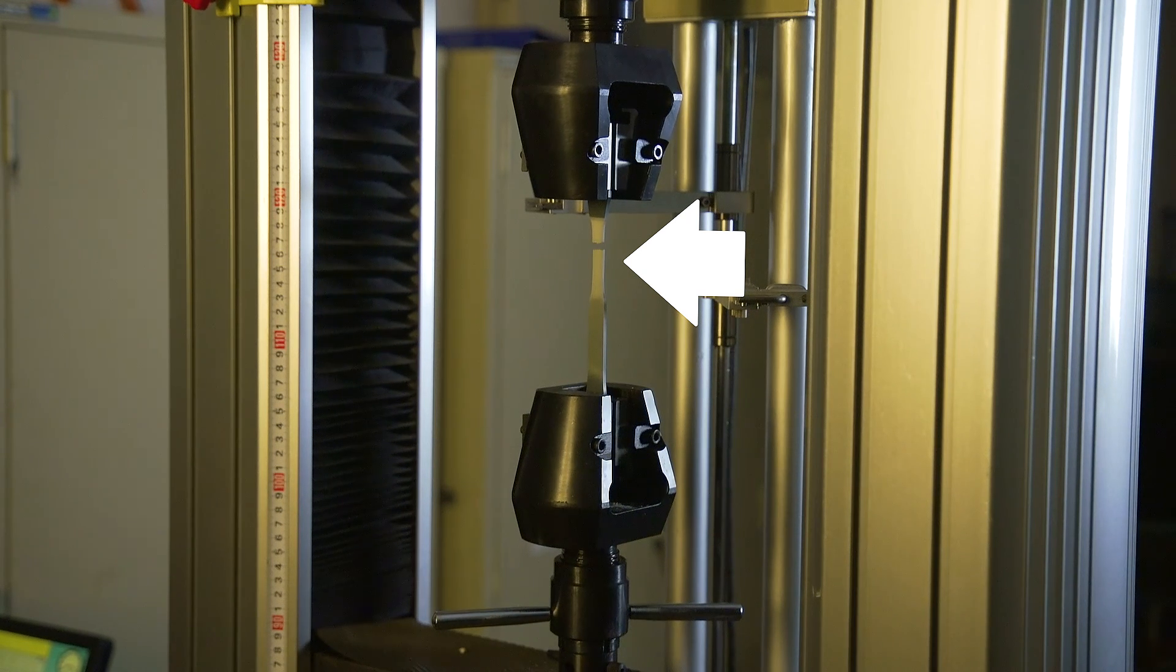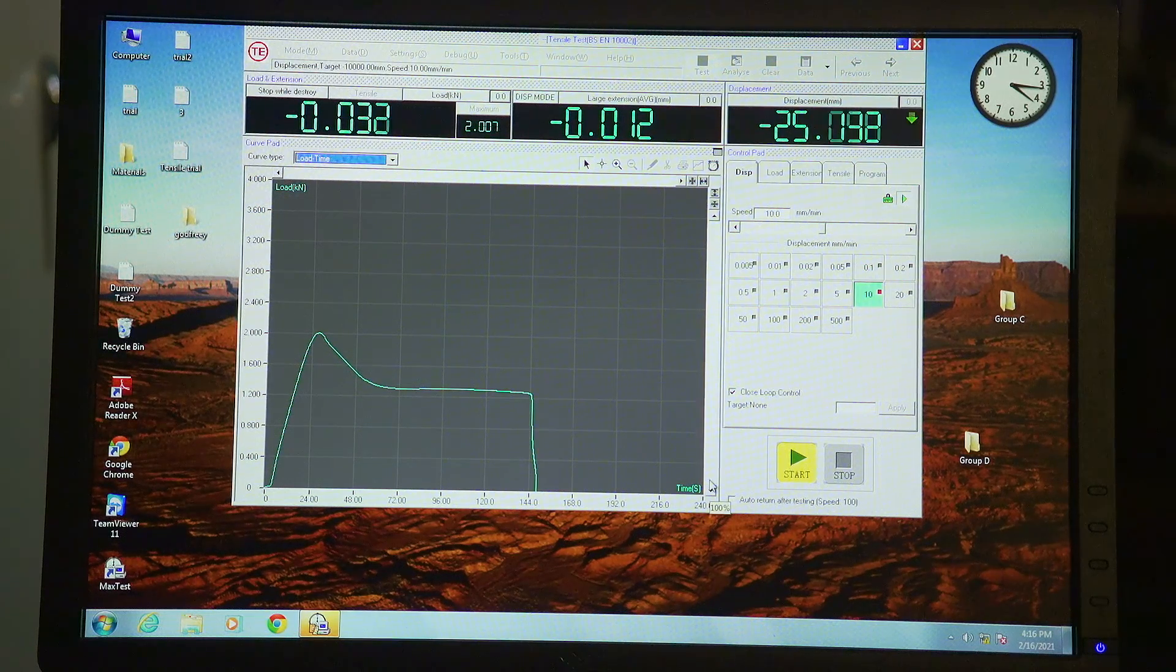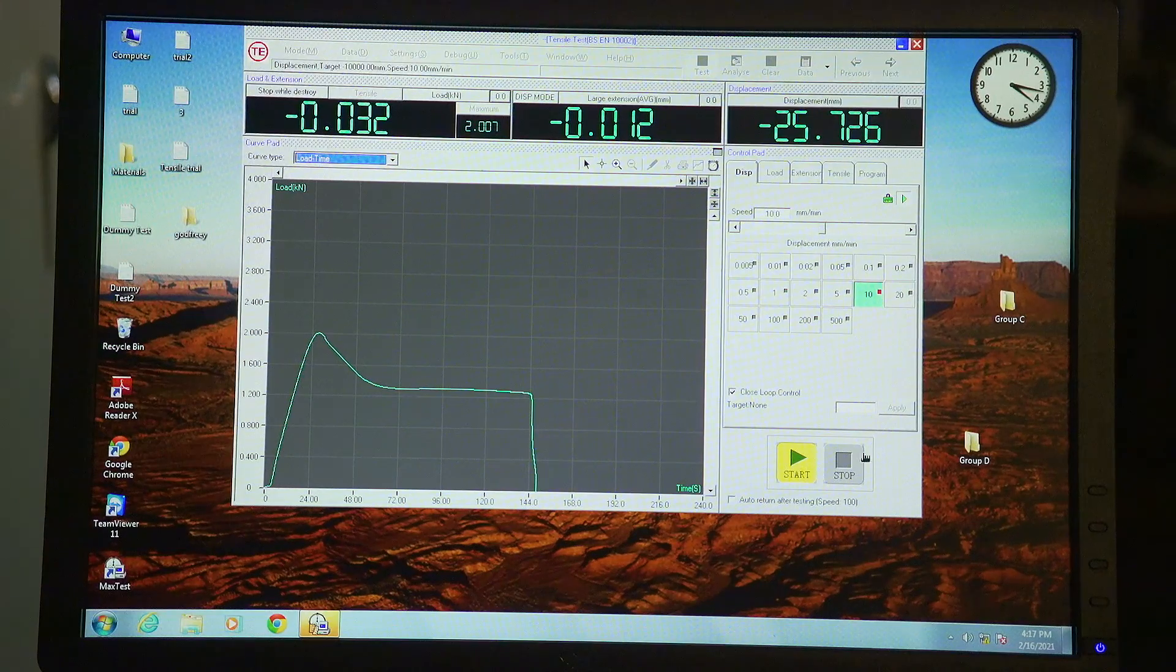So essentially, at this point now, the chains are now completely untangled, and the bonds within the polymer have now failed, which results in the specimen breaking.